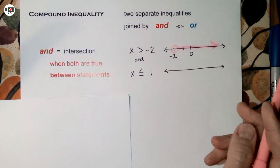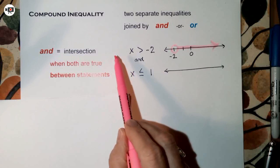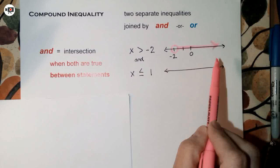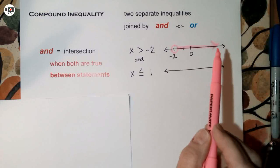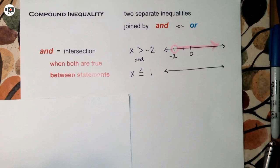That arrow-matching trick only works when the variable is isolated on the left. You could also read it backwards — negative 2 is less than x — but then you can't use the arrow trick. So if you want to use it, keep the variable on the left. That is the graph of x is greater than negative 2.